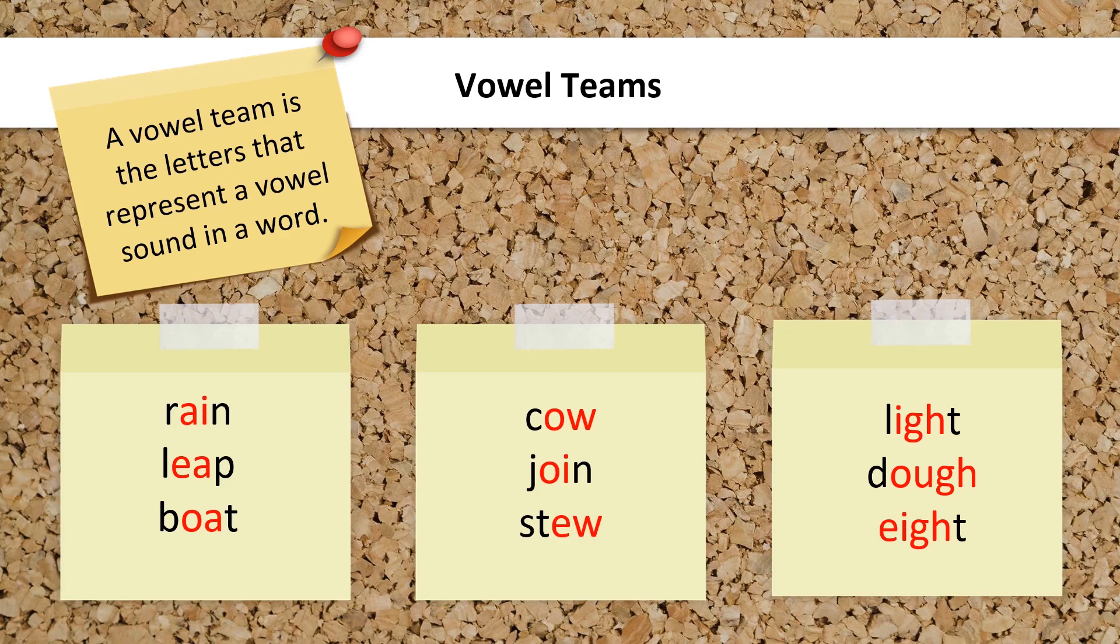Diphthongs are also vowel teams that produce a sliding sound, such as OW in cow, OI in join, or EW in stew.